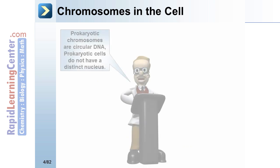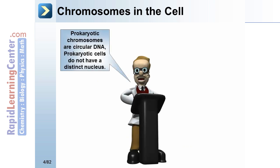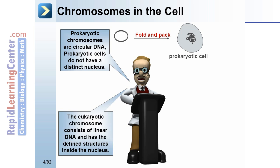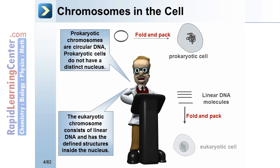Chromosome in the cell. Prokaryotic chromosomes are circular DNA, and the cell has no distinct nucleus — they are folded and packed, as shown in this schematic of a prokaryotic cell. The eukaryotic chromosome consists of linear DNA with defined structures inside the nucleus; linear DNA molecules are folded and packed within the eukaryotic cell's nucleus.